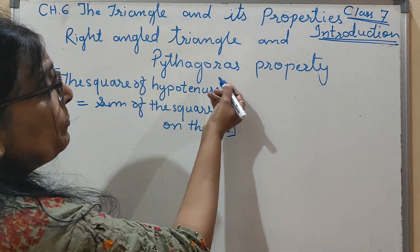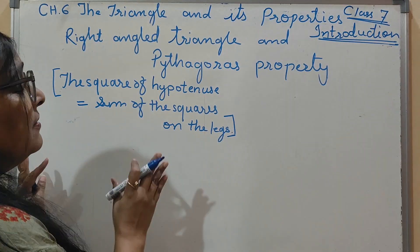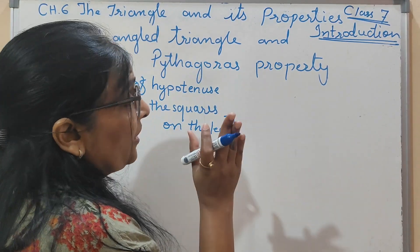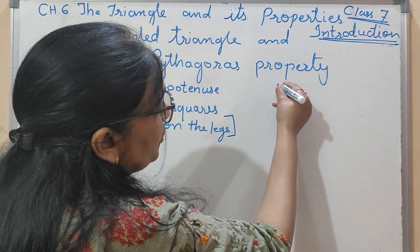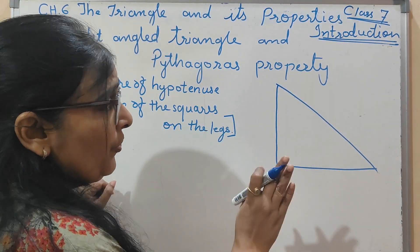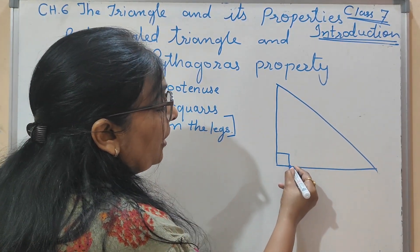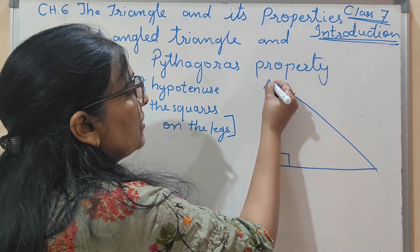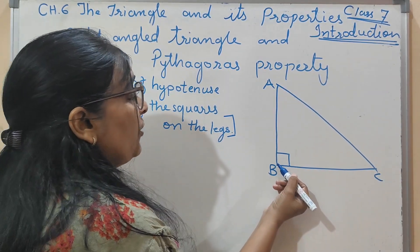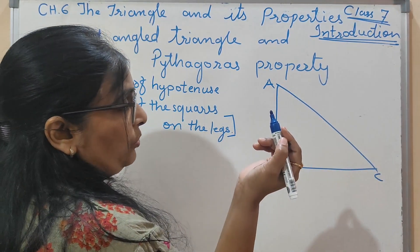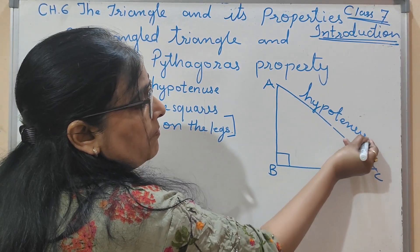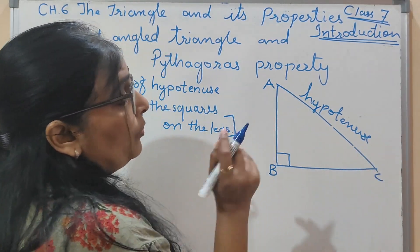Next is the right angle triangle and Pythagorean property. This theorem is applied only in a right angle triangle — where one angle is a right angle, that is 90 degrees. Suppose this triangle is ABC, which is a right angle triangle. The slanting line opposite to the right angle is called the hypotenuse. So AC is the hypotenuse.